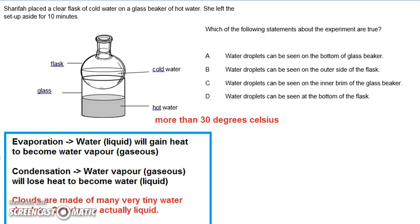There are lots of temperatures going on here. Hot water is usually anything more than 30 degrees Celsius — that's what we humans would normally call hot water, something above room temperature. Cold water is anything lesser than room temperature, which is lesser than 25 degrees Celsius, usually.